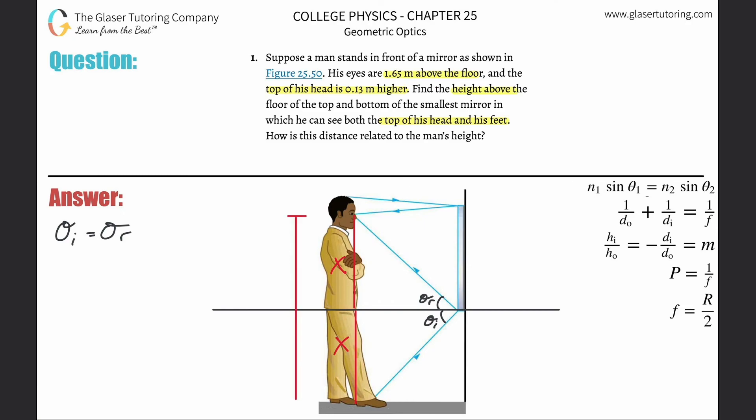If they told us now that the total distance from the man's eyes all the way down to the floor is equal to 1.65 meters, we can find both of these x values. All we would simply do is take the 1.65 and divide it by two. So this x here is about 0.825 meters, and so is this one, 0.825 meters.